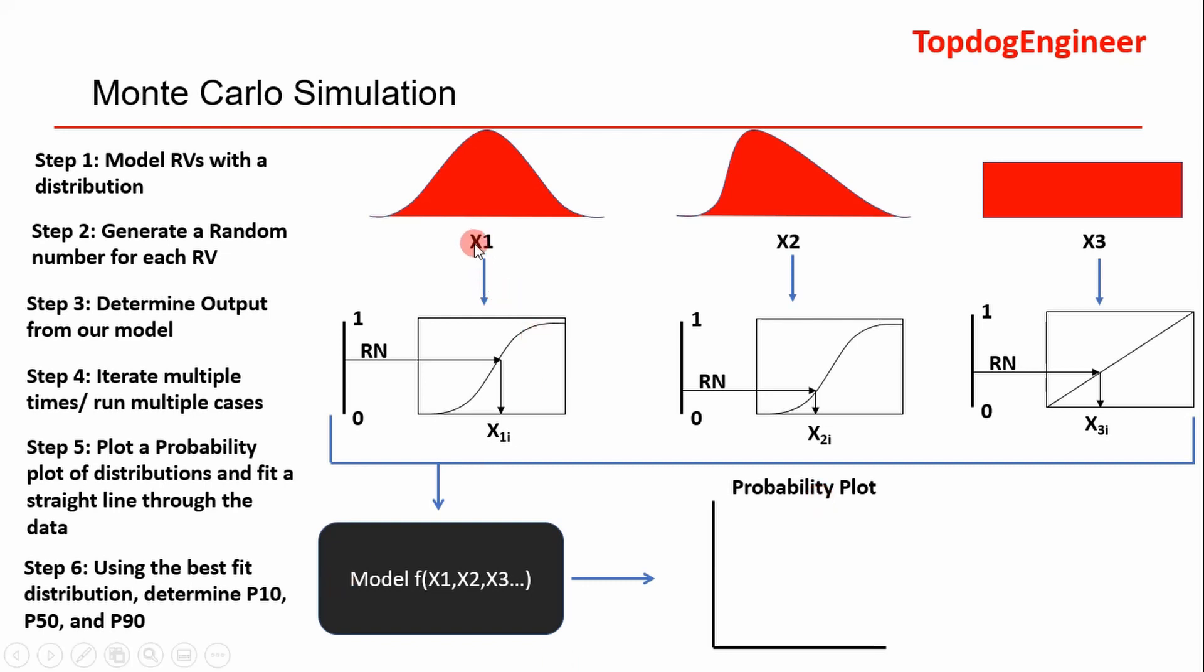Essentially how it works—this image right here basically summarizes it as best as I could do it. What you have is you have inputs, they call them random variables, which essentially have a wider range array of values, and you can model them as distributions. For example, we can model X1 as a normal distribution, X2 is logarithmic, X3 is uniform.